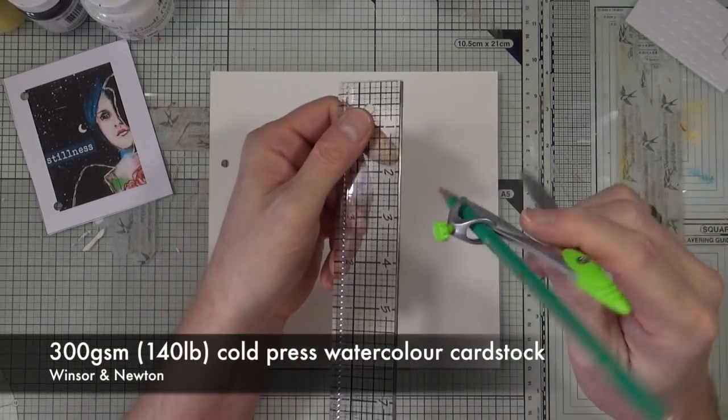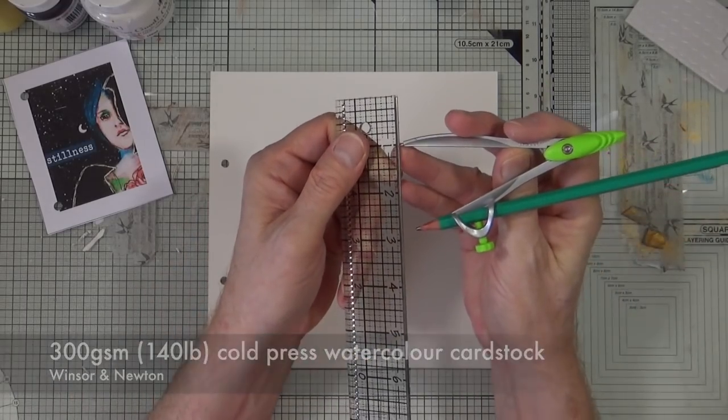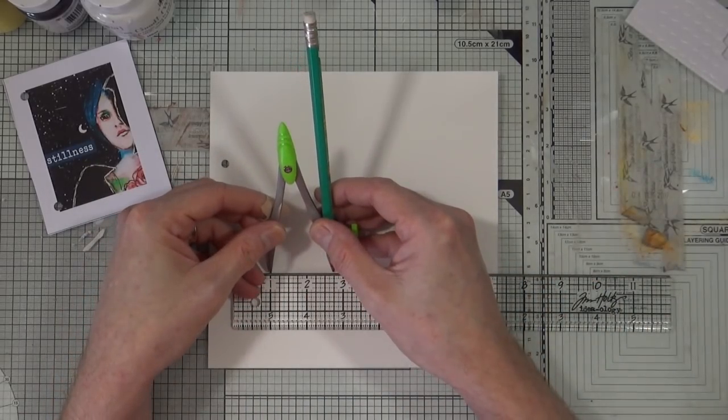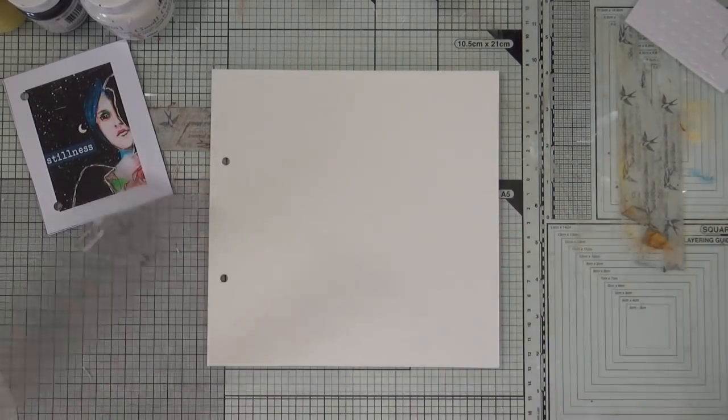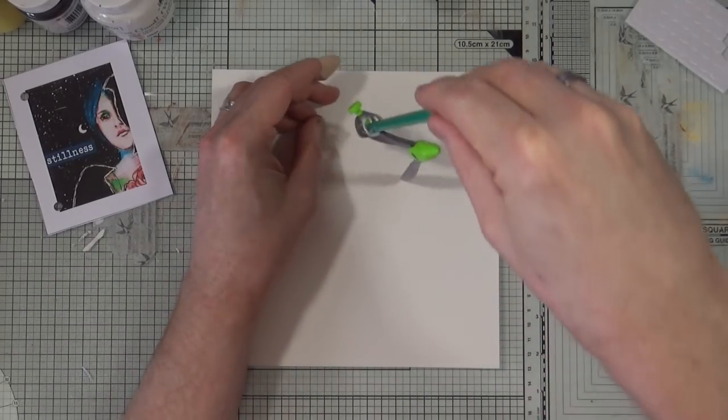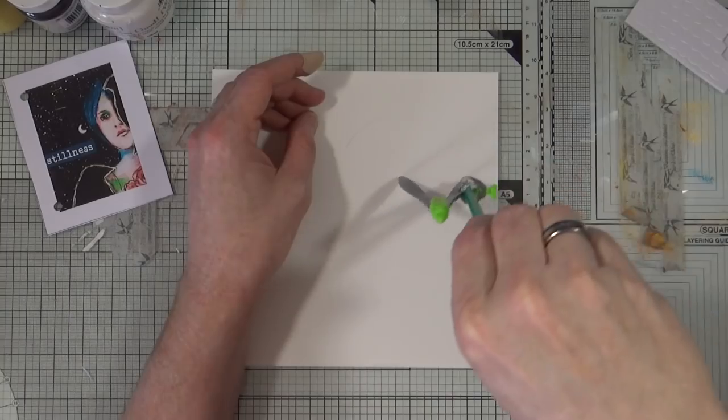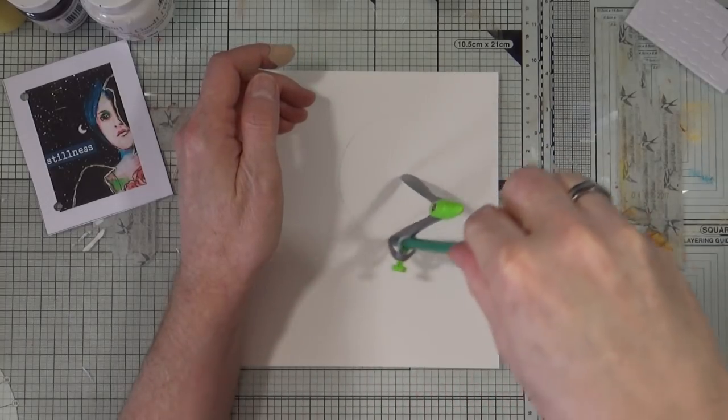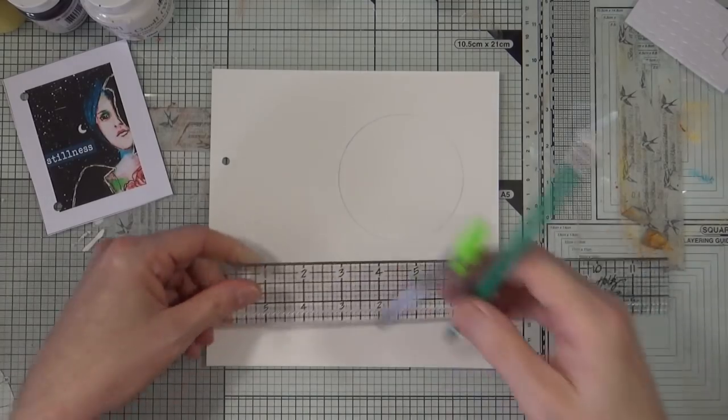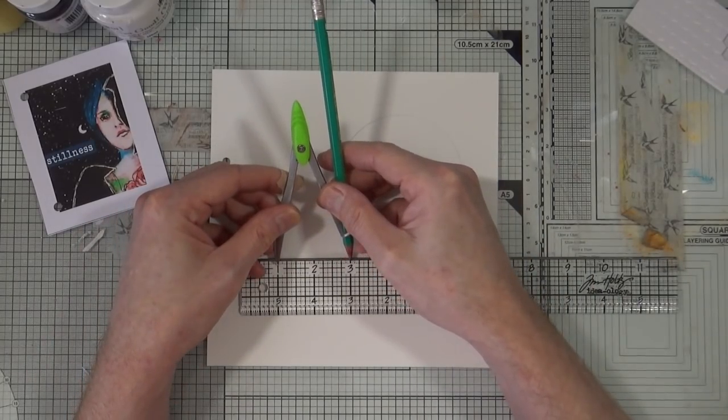I'm starting off with a piece of 300 GSM or 140 pound cold pressed watercolor cardstock and I've dusted off my old compass. I'm going to create two sets of concentric circles starting from an inch and a half going outwards and an inch in the bottom left hand corner starting from an inch and then going outwards from there until they join.